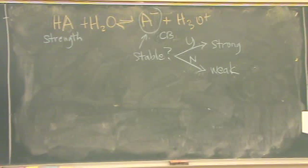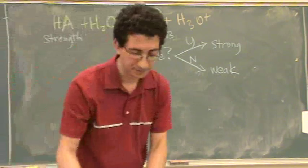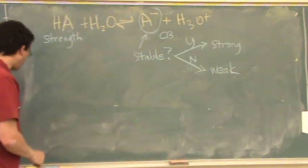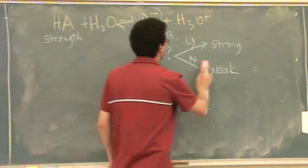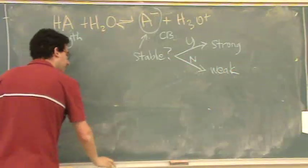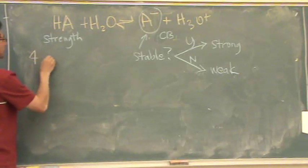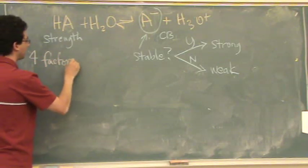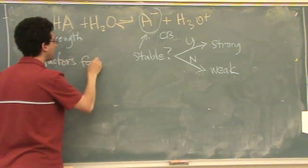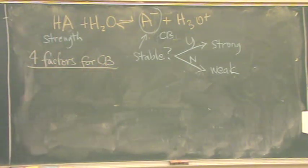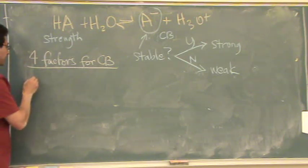There are four factors to determine if something's stable. Four factors for the conjugate base. You're going to do this in OCHEM again a lot. They're going to have much harder problems than what we're doing. If you're taking OCHEM, lock this up in your brain. You're going to do it again in 118a or 8a whenever your first OCHEM comes around.